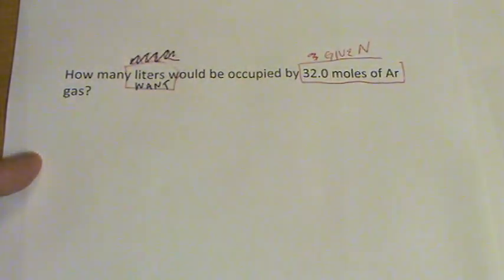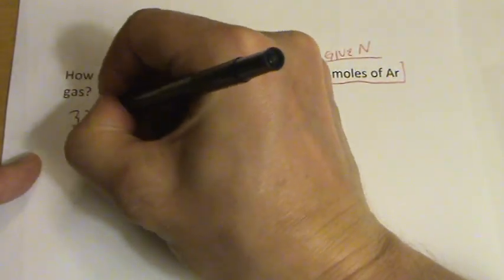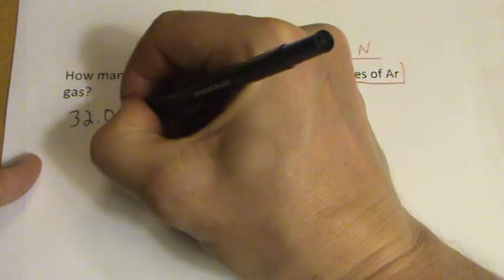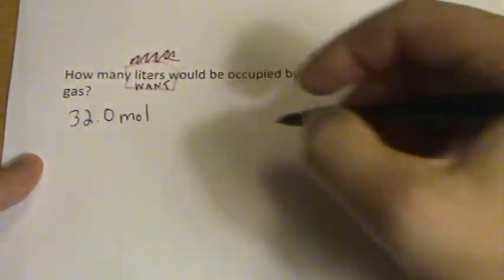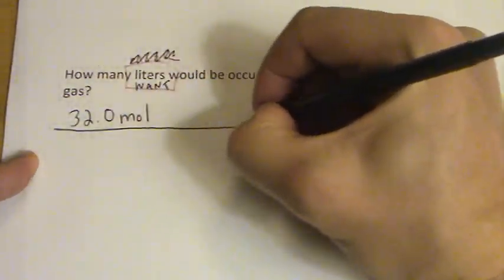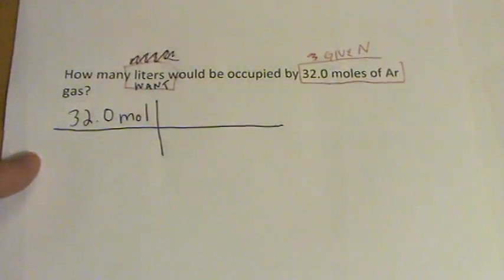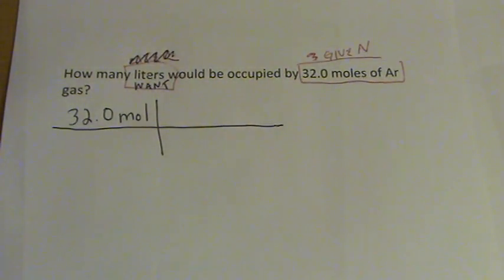We have this, we want this, so we just set it up. We put our given, 32.0 moles, and it's argon gas, but that really doesn't matter here because we're dealing with a gas. Any gas is going to occupy 22.4 liters.